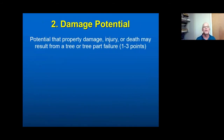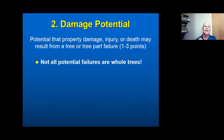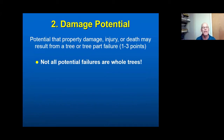Damage potential ranges from one to three. The main reason we included damage potential in this rating system is that not all failures are whole trees. When you look at many hazard tree rating systems, they only have two components — something addressing defect and something addressing target. Our system includes damage potential because we've had incidences, including fatalities, caused by parts of trees — particularly large parts falling from a fairly good height.